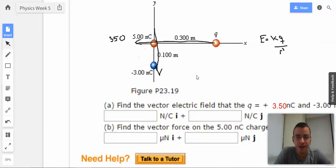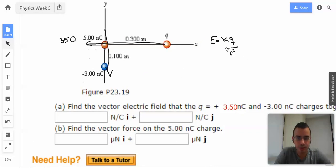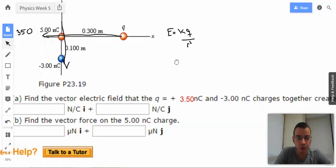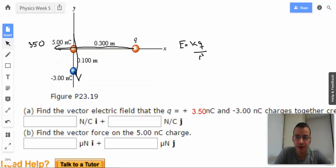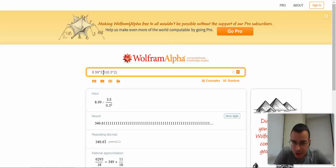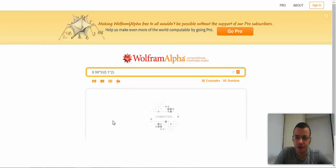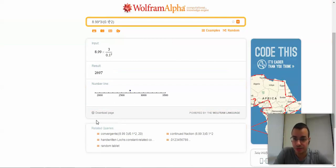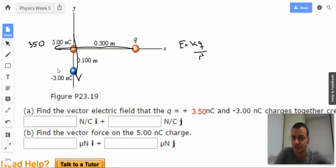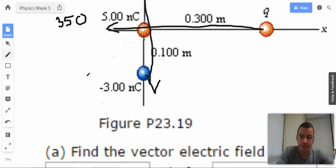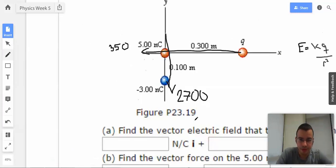Okay, now the same thing for this guy down here. We're going to do KQ over R squared. This time we have 3 instead of 3.5. And our distance is 0.1. So, it should have much more impact because it's closer. 2697, I think I'll call that 2700.